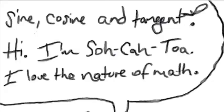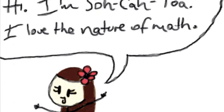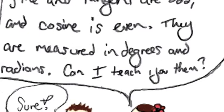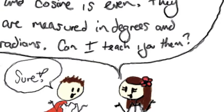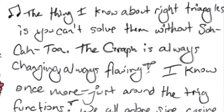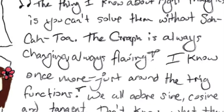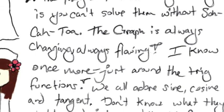Hi, I'm Sokotoa. I love the nature of math. Sine and tangent are odd, and cosine is even. They are measured in degrees and radians. Can I teach you them? The thing I know about right triangles is you can't solve them without Sokotoa. The graph is always changing, always flowing. I know once more, just around the trig functions, we all adore.